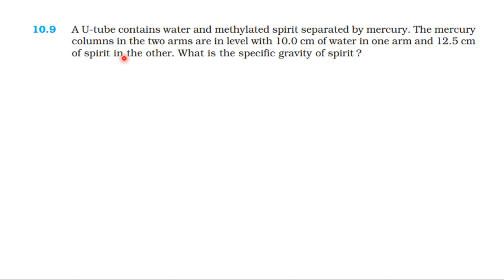From the NCERT textbook, from the topic Mechanical Properties of Fluids, Exercise 10.9. A U-tube contains water and methylated spirit separated by mercury. The mercury columns in the two arms are at the same level, with 10 cm of water in one arm and 12.5 cm of spirit in the other. What is the specific gravity of the spirit?